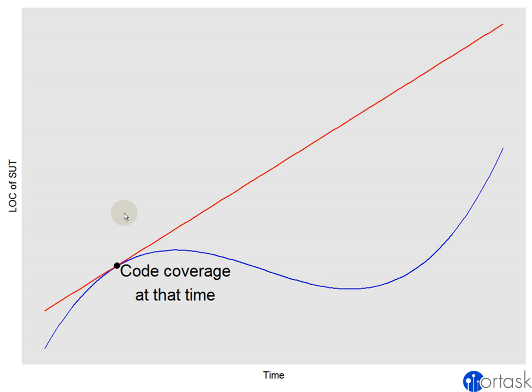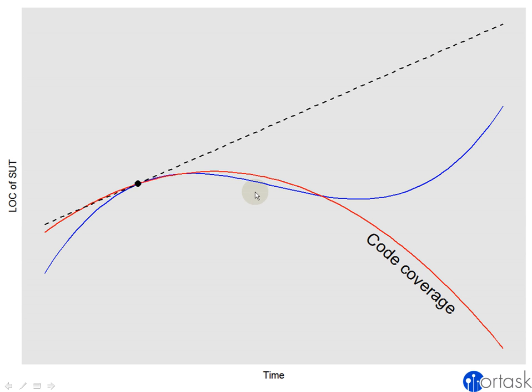Now the problem with code coverage is that it misleads. It would be a mistake to assume that because code coverage has this slope at this specific point in time that it will have that slope throughout the project. In reality, what happens is that code coverage does not follow the slope at all. It might go down, it might go up, but as a system under test evolves, code coverage is independent of what it used to be before.